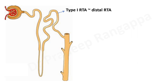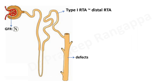Glomerular function is normal. There are three types of renal tubular acidosis. In type 1, the problem is in the distal convoluted tubule. There are usually defects in either the proximal convoluted tubule, distal convoluted tubule, or collecting tubules. Predominantly, the defect is with chloride reabsorption — there is increased chloride reabsorption leading to hyperchloremia.